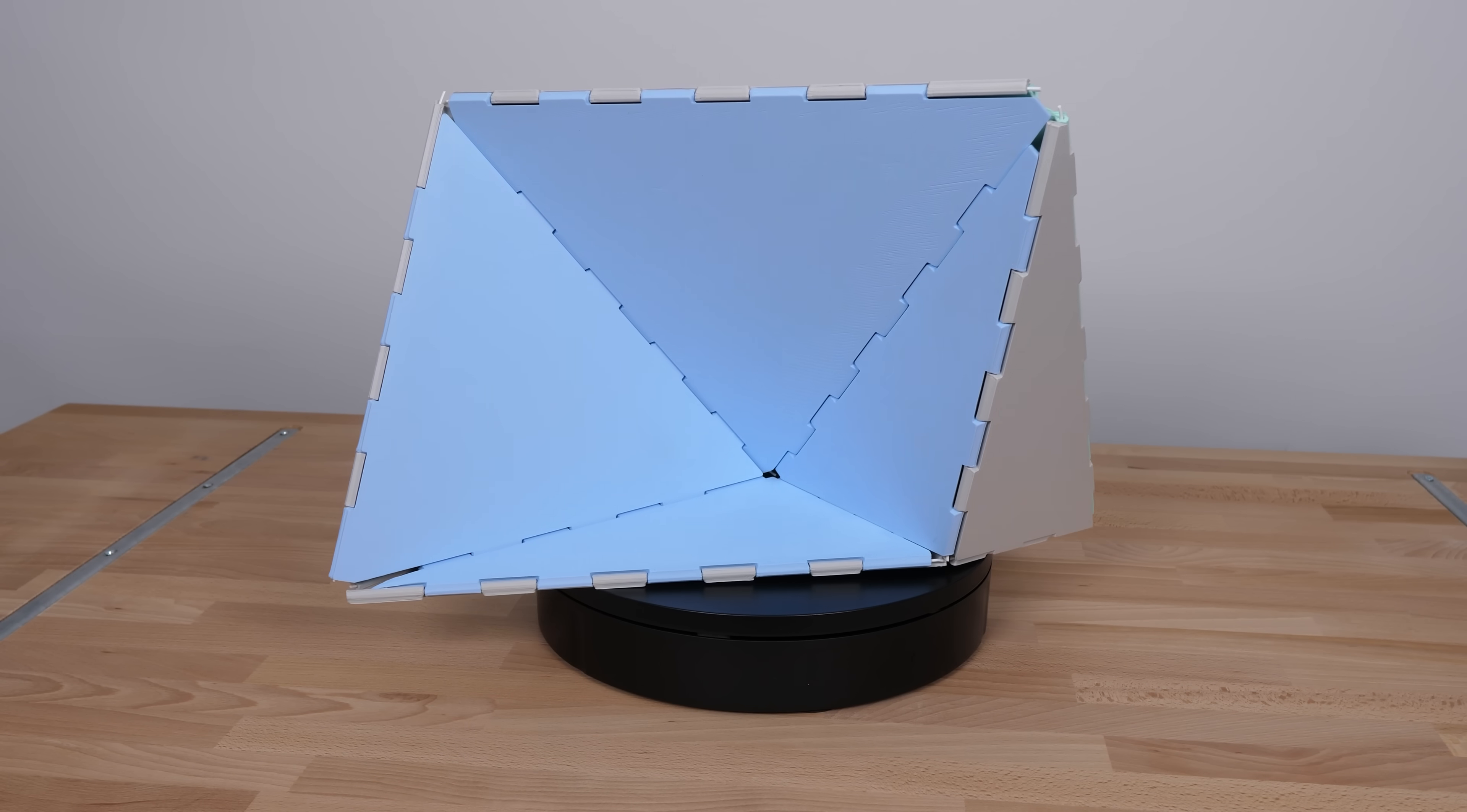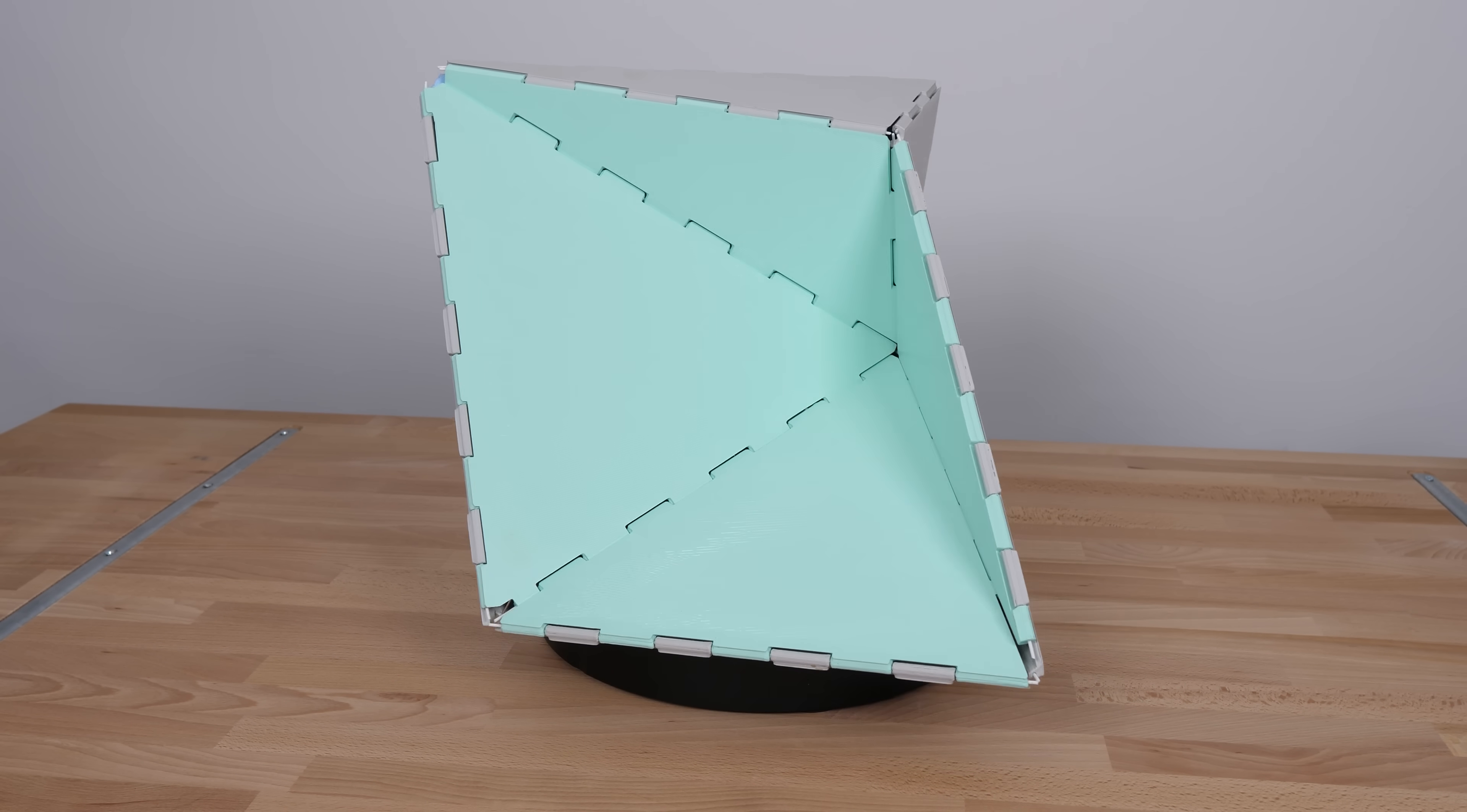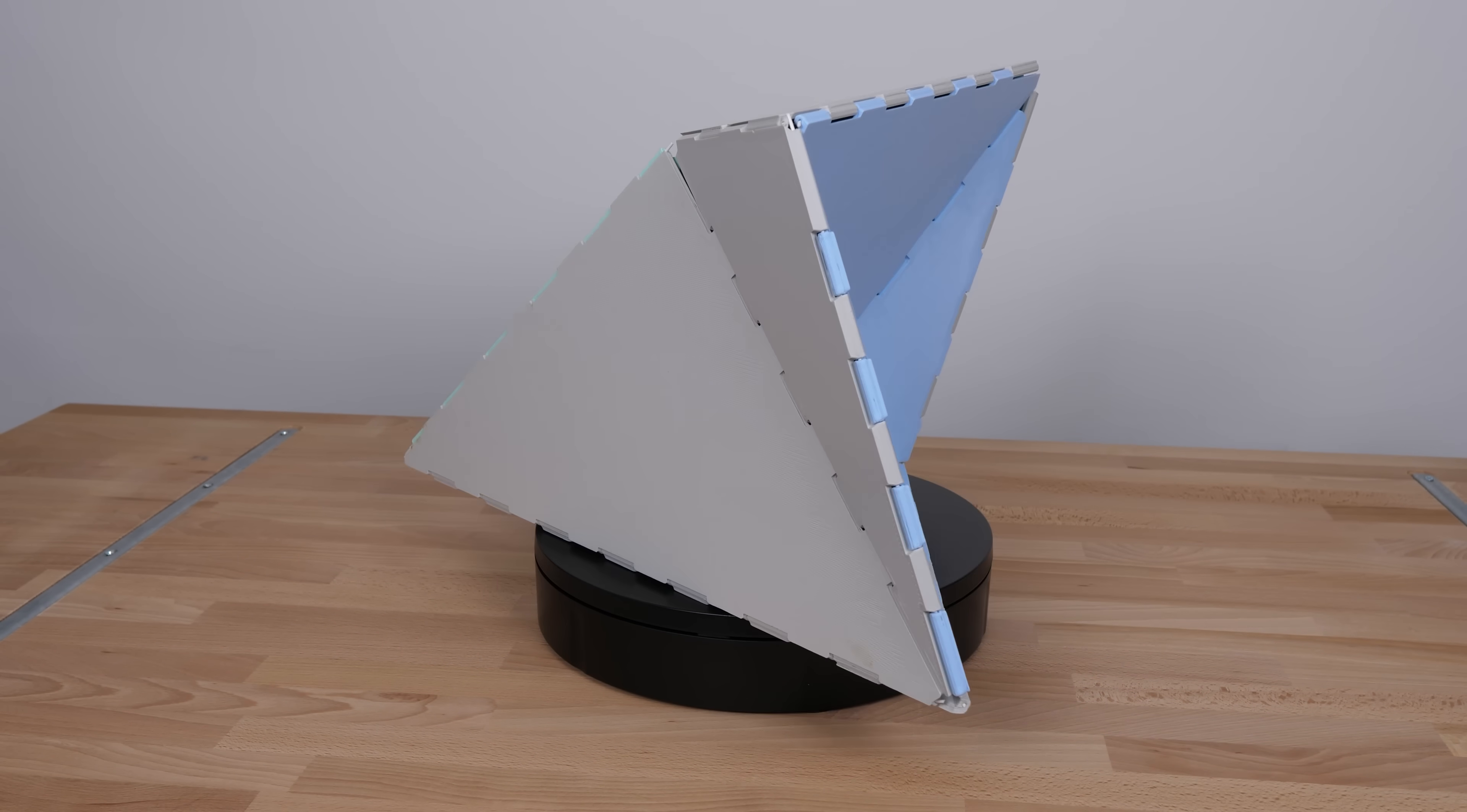Robert Connolly discovered the first proper flexible polyhedron in 1977. It's this monster with 18 faces. This much simpler version with 14 faces was discovered by Klaus Steffen a year later. And this is the thing that Ivan printed for me. It's still not known whether a simpler flexible polyhedron exists.